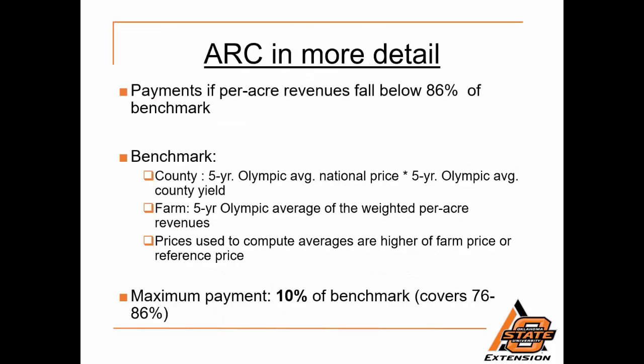Looking at ARC in more detail, payments are made if the per acre revenues fall below 86% of the benchmark revenue. For county level ARC, a five-year Olympic average national price is multiplied by the five-year Olympic average county yield. For ARC Individual at the farm level, a five-year Olympic average of the weighted per acre revenues are used. Prices used to compute the averages are the higher of the farm price or the reference price. The maximum payment made under ARC is 10% of the benchmark revenue, which covers losses from 76% to 86% of the benchmark revenue. The actual revenue must fall below 86% of the benchmark in order to trigger payments.